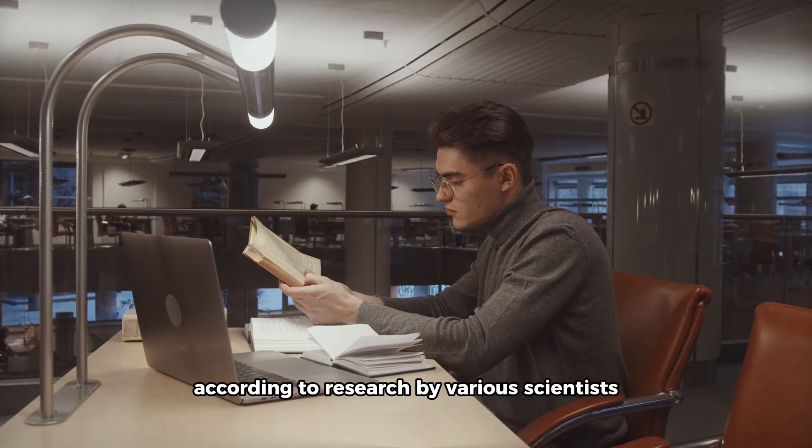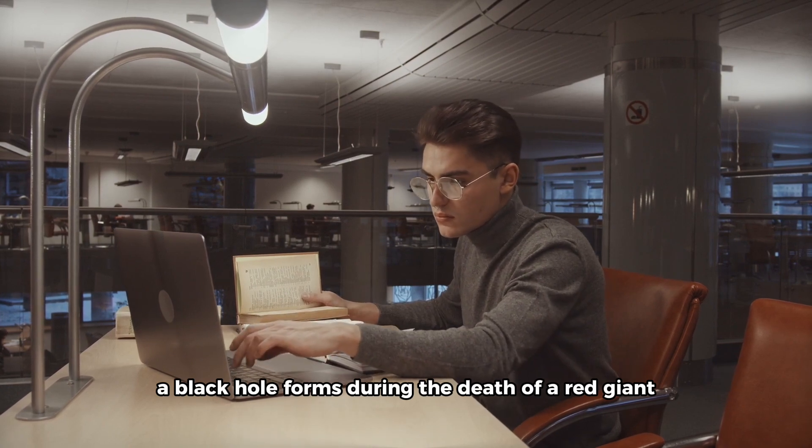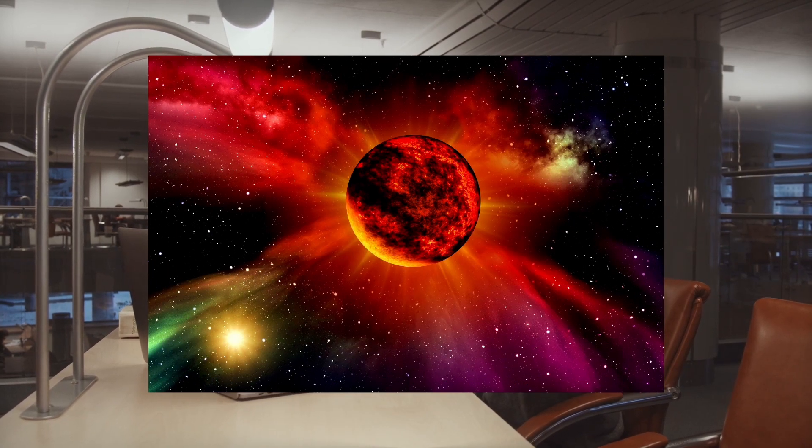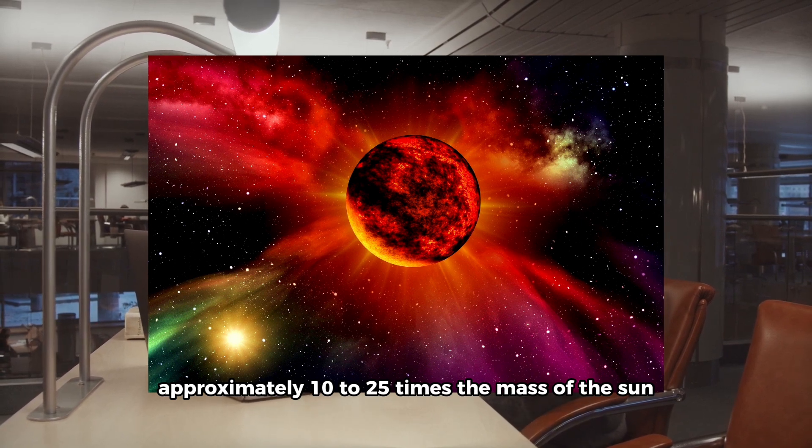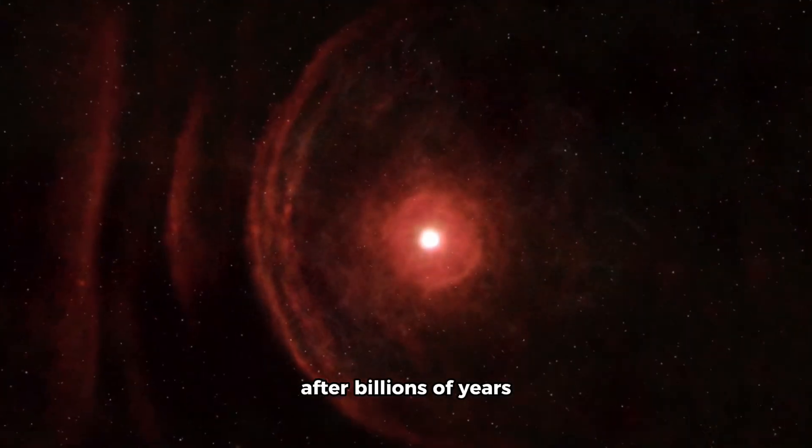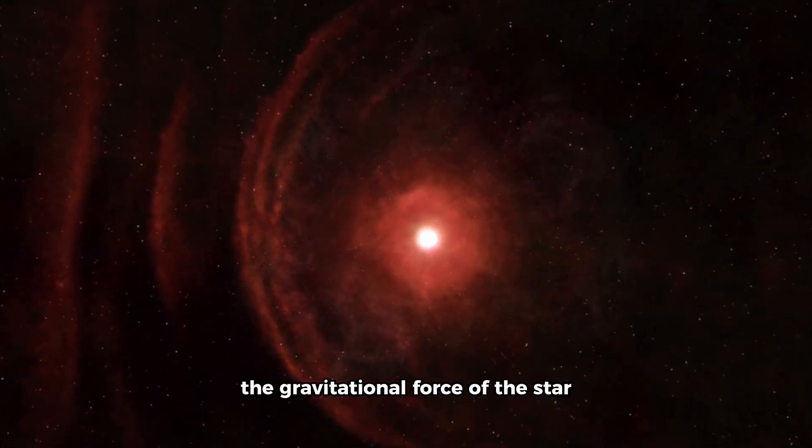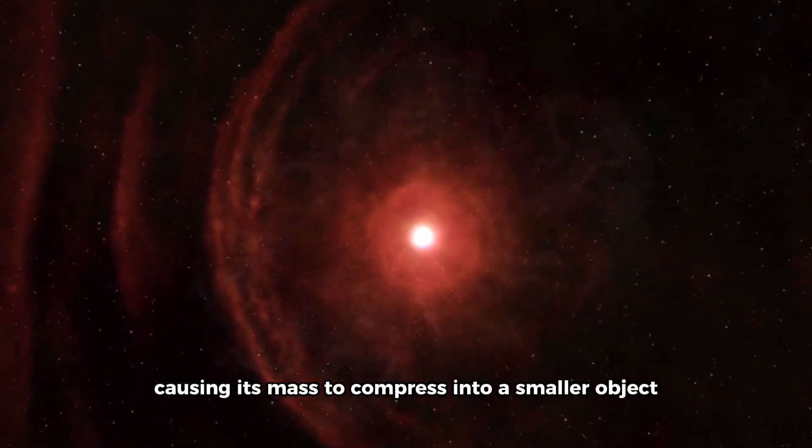According to research by various scientists, a black hole forms during the death of a red giant, a star with a volume approximately 10 to 25 times the mass of the sun or even more. After billions of years, the gravitational force of the star begins to exert pressure, causing its mass to compress into a smaller object known as a white dwarf.